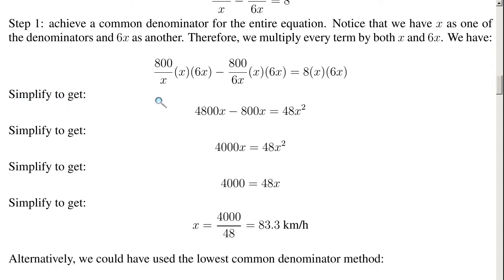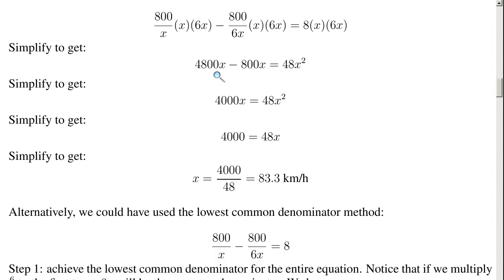Simplifying: the x here and here cancel, so we have 800 times 6x, which is 4800x. The 6x and 6x cancel, giving negative 800x. And 8 times x times 6x equals 48x squared. So 4800x minus 800x gives 4000x equals 48x squared.